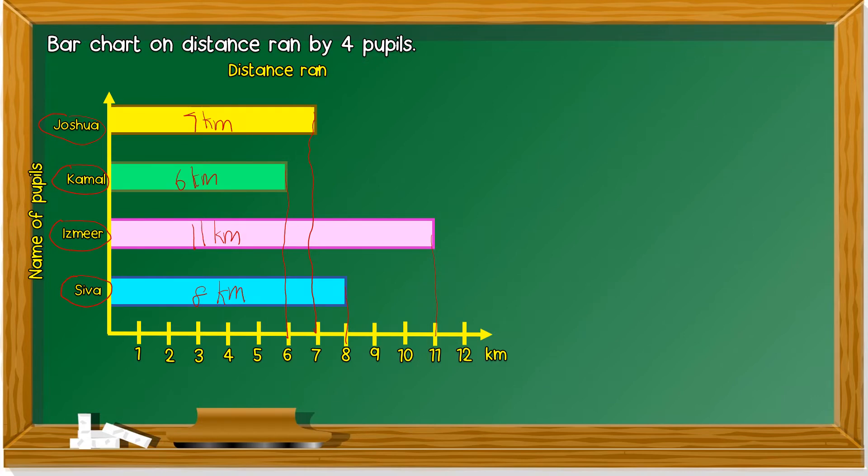Let's take a look at the question. How far did Joshua run? Okay, Joshua ran seven kilometers.